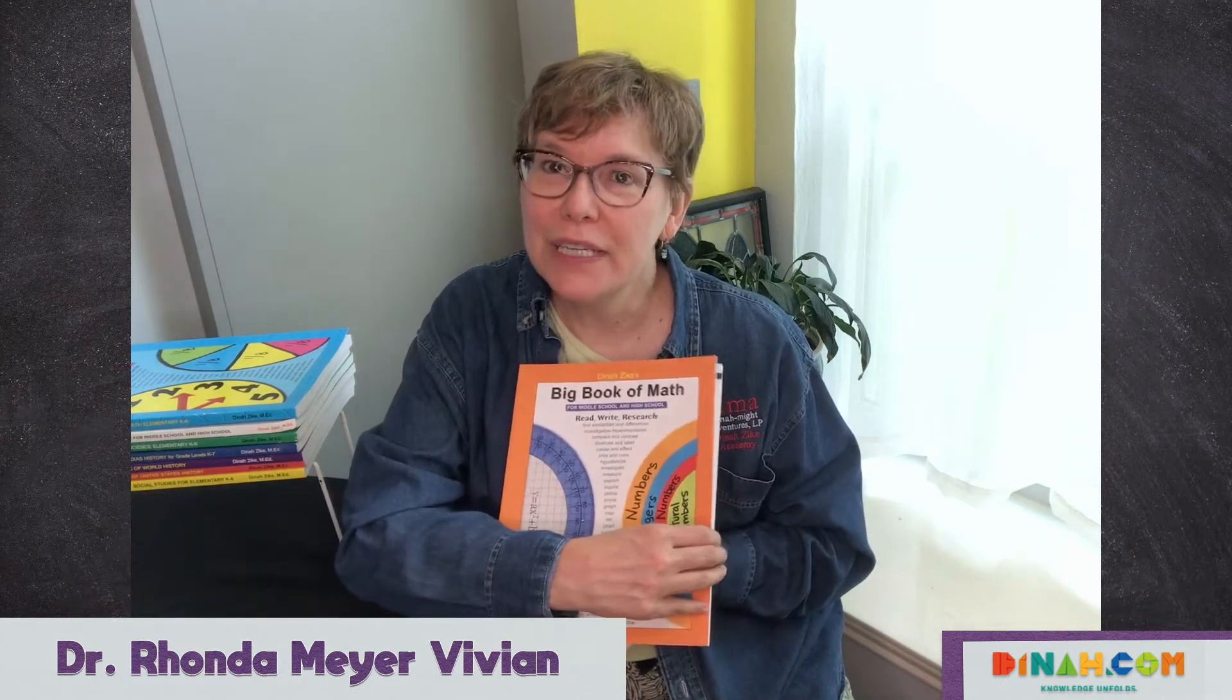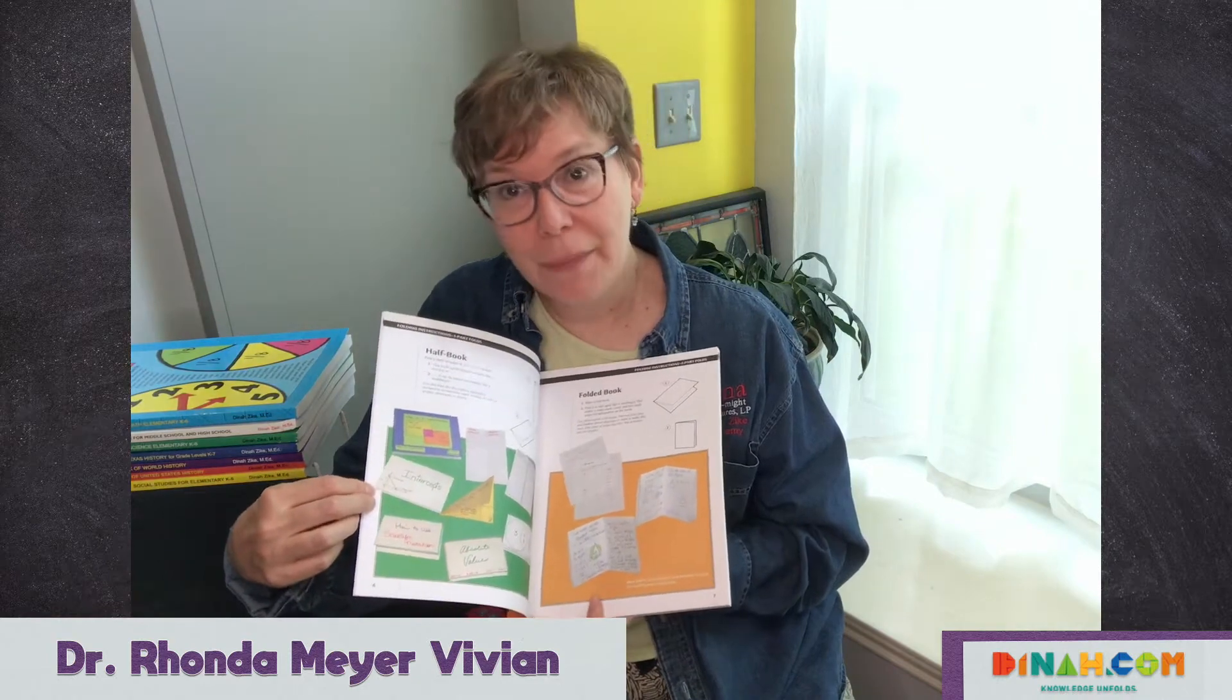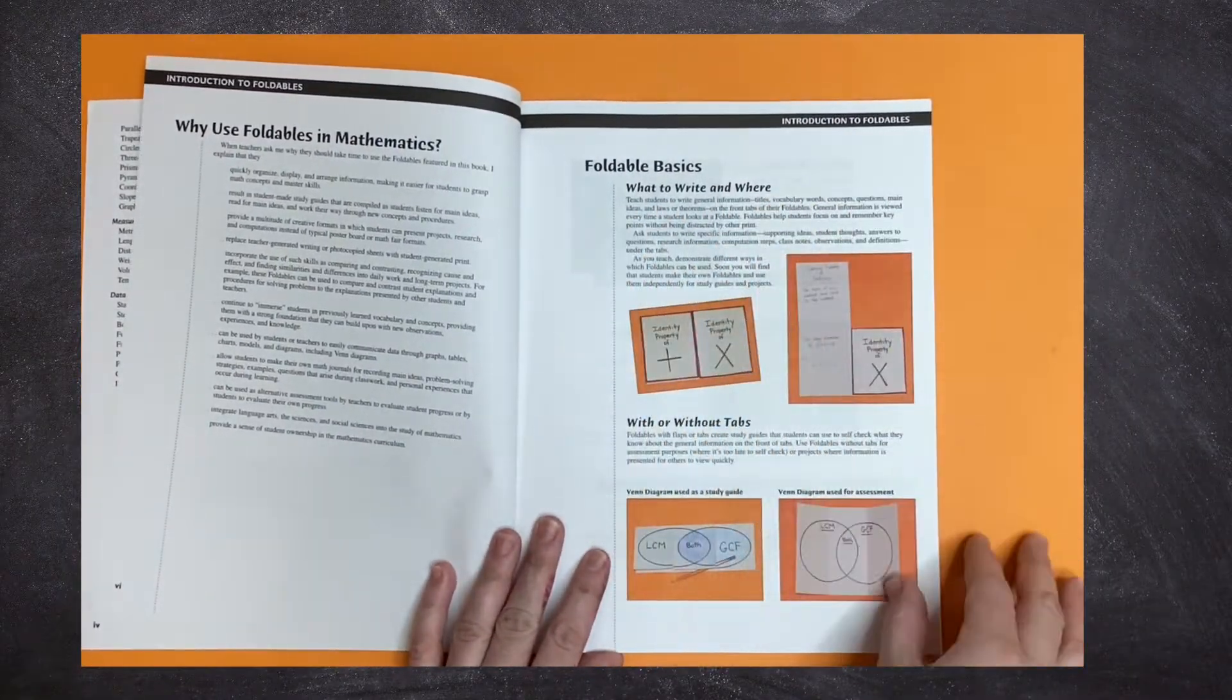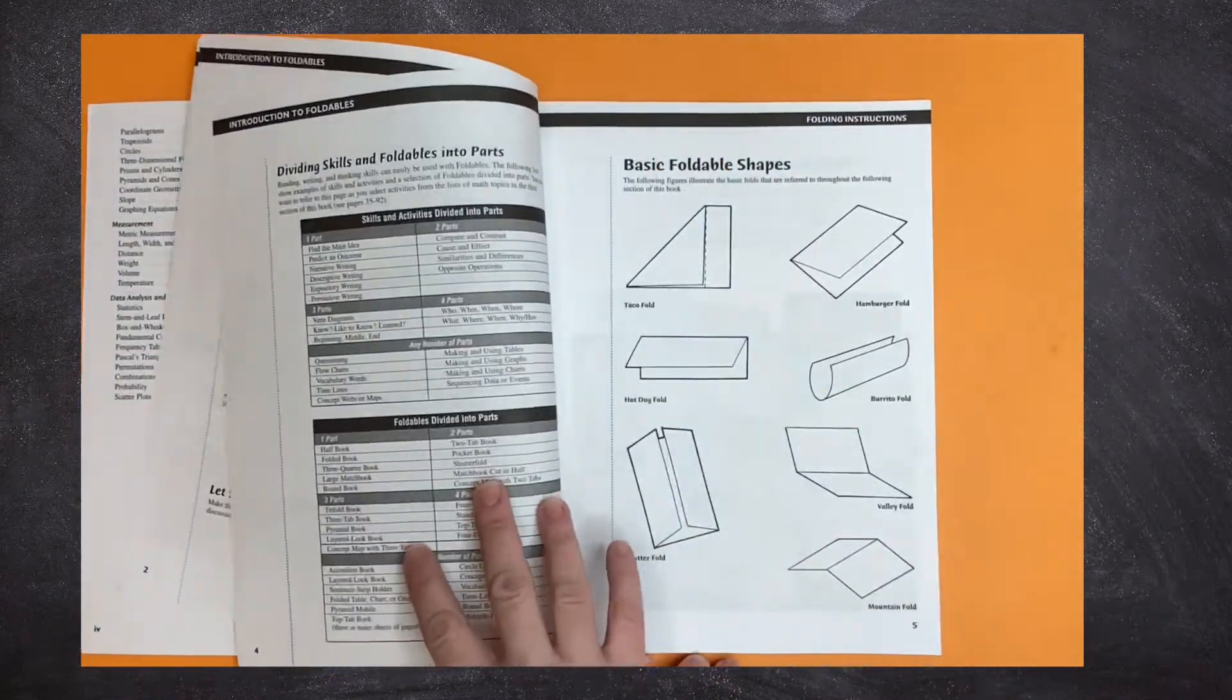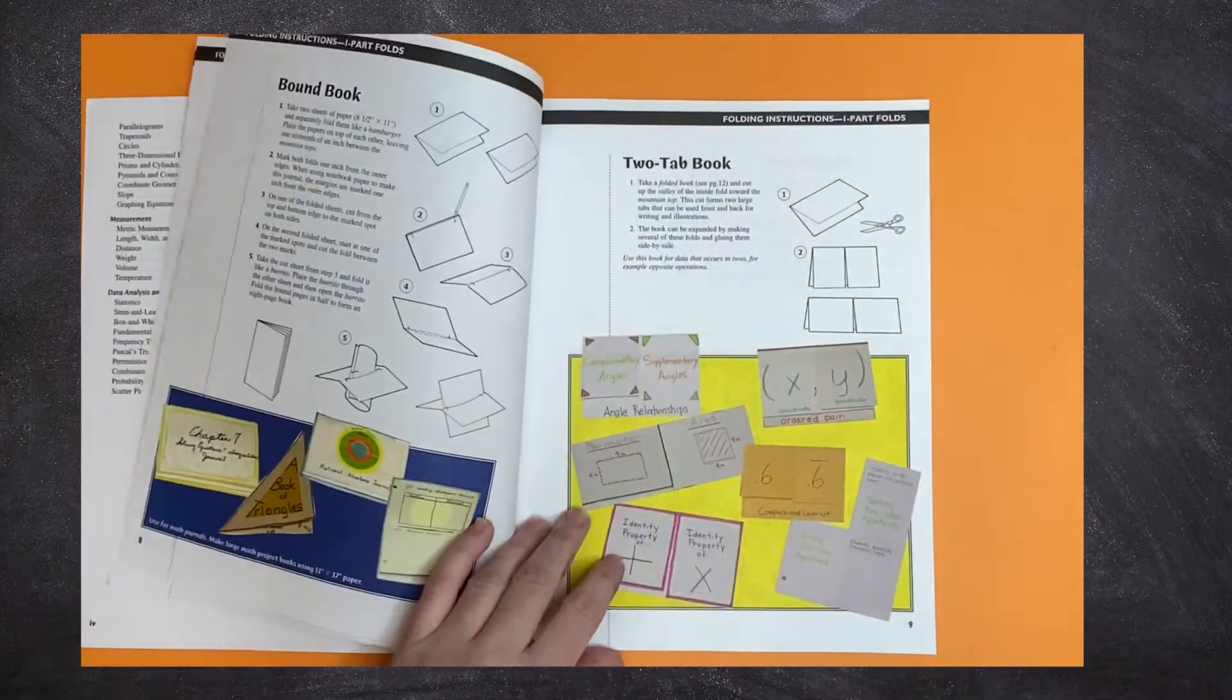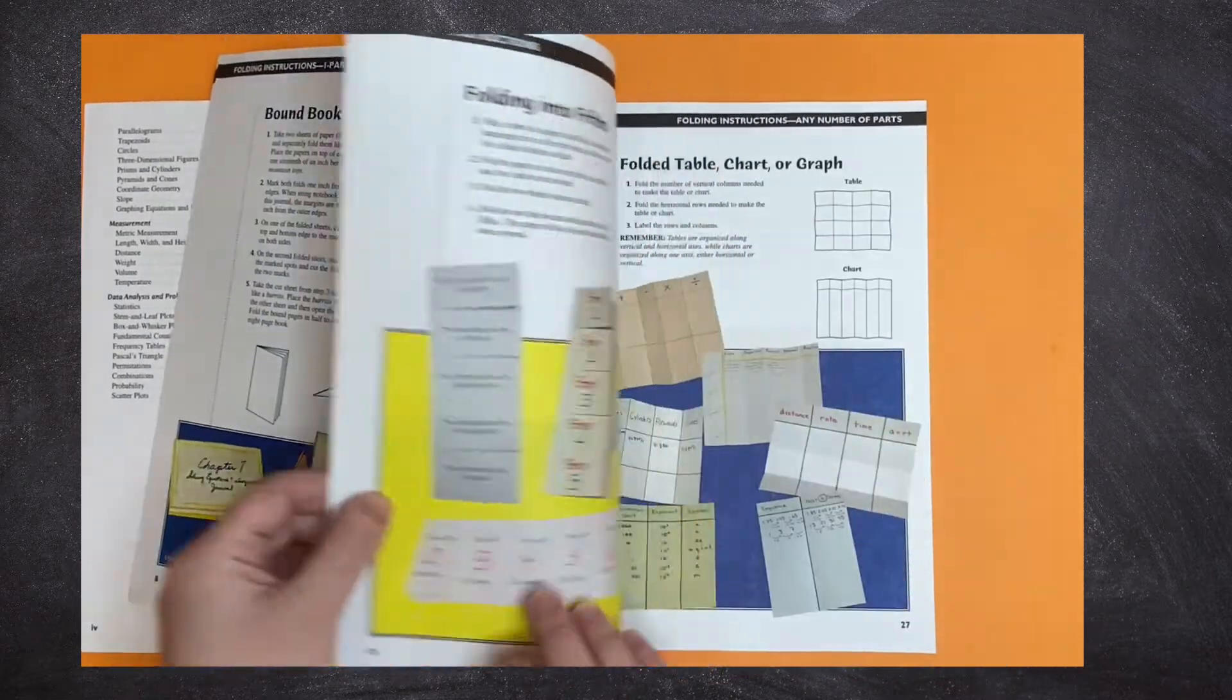This book is arranged in three general sections. The first section shows how to make all the folds that Dinah's going to use. And by the way, there are a few pages at the very beginning which explain how and why and where we use foldables in teaching. This might be a really useful section for you to take a look at if you're not very familiar with Dinah's materials.